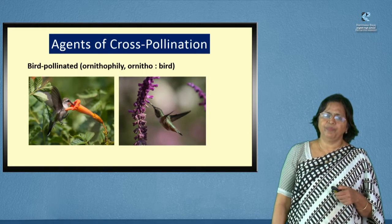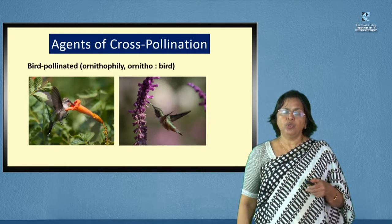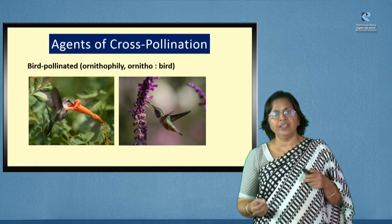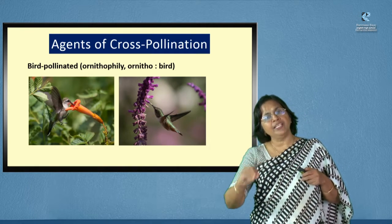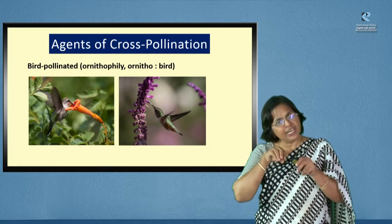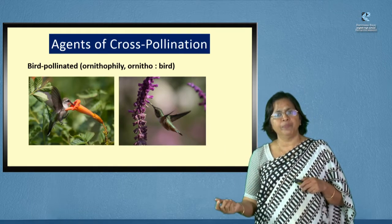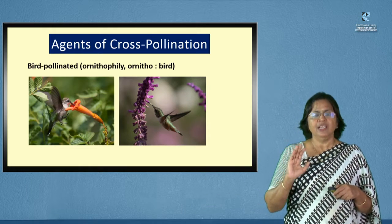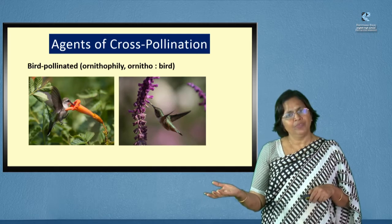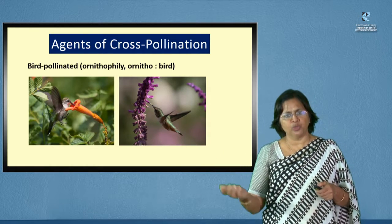Bird-pollinated flowers are often pollinated by birds with long and often curved beaks. The flowers are tubular in shape if they are to be pollinated by birds. Birds try to reach the nectary at the base of the flower; some birds even feed on the pollen or the filament of the flower. As they push into the tubular corolla, some pollen gets stuck to their beak or the stigma rubs against it and picks up pollen. This is the same process for all agents of pollination: the insect collects pollen from one flower and deposits it on the stigma of another; the wind picks up pollen and the hanging stigma picks it up from the wind.